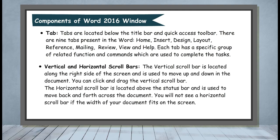Vertical and Horizontal Scroll Bars. The vertical scroll bar is located along the side of the screen and is used to move up and down in the document. You can click and drag the vertical scroll bar. The horizontal scroll bar is located above the status bar and is used to move back and forth across the document. You will not see a horizontal scroll bar if the width of the document fits on the screen.